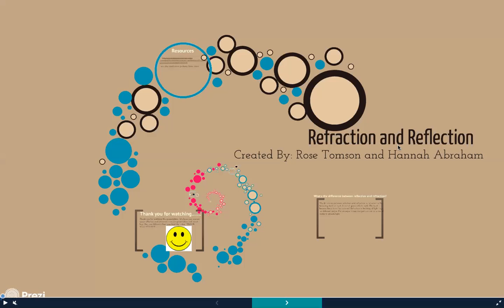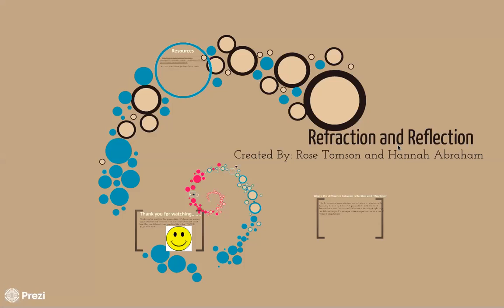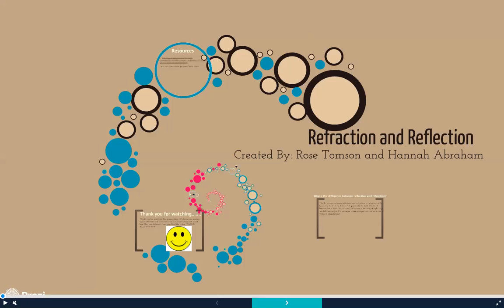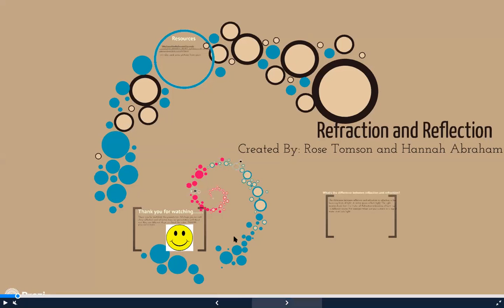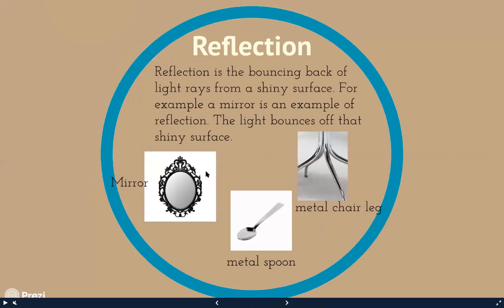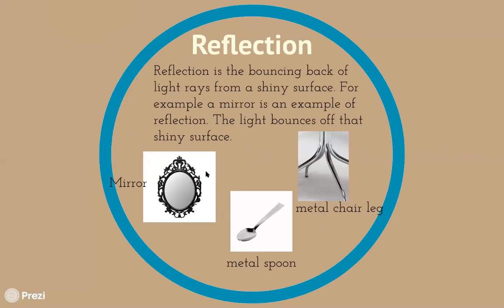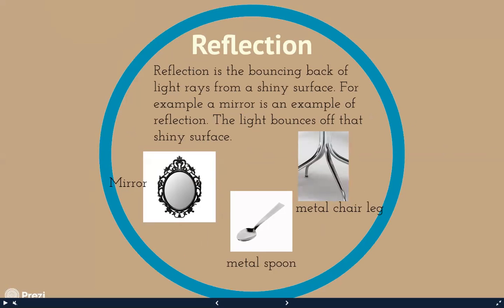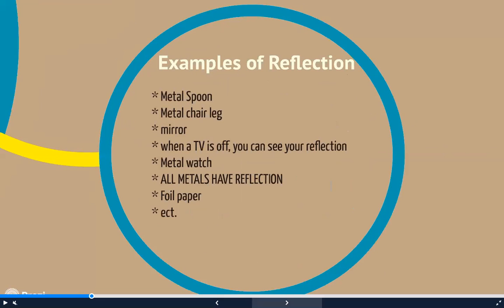Hello everyone, this is a video on refraction and reflection by Rose Thompson and Anna Abraham. When talking about light, the first thing to focus on is reflection. Reflection is the bouncing back of light rays from shiny surfaces. For example, a mirror is an example of reflection — the light bounces off the shiny surface and comes back into your eye so you can see yourself.